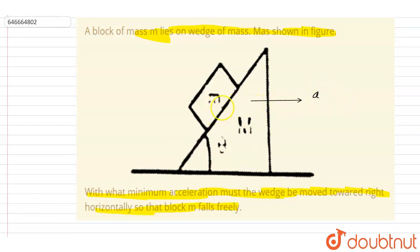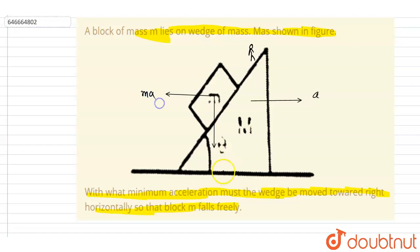For the block to fall freely, the normal reaction on it should be zero. From the pseudo force frame, the weight acts downward and the pseudo force acts in the horizontal direction. If we see from this frame, it is ma. This is mg. We can break these into components: mg sinθ and ma cosθ.